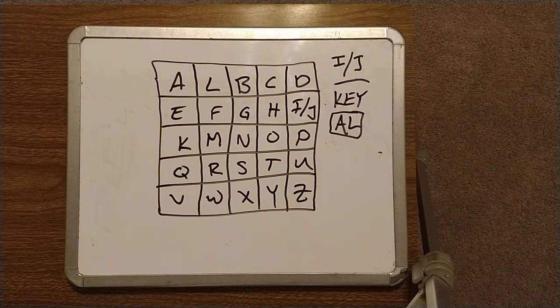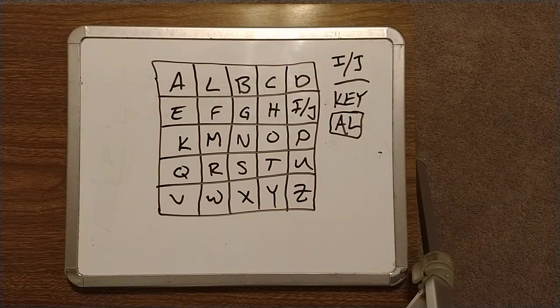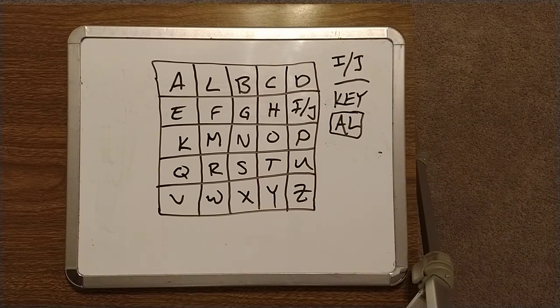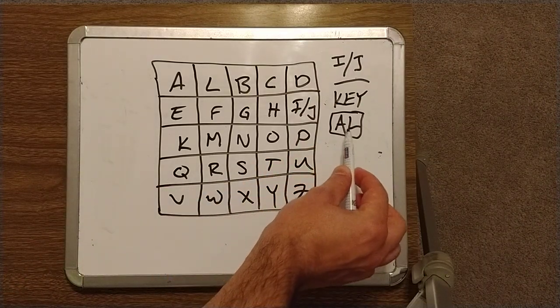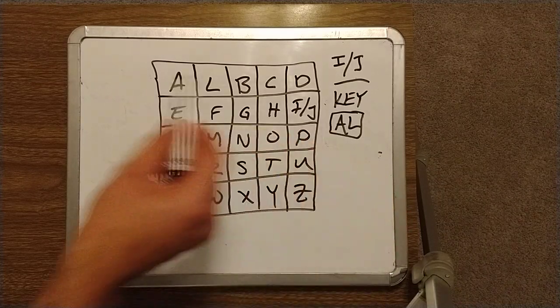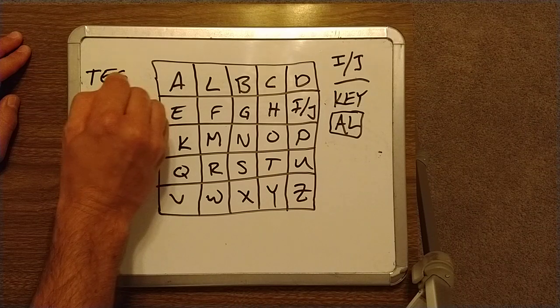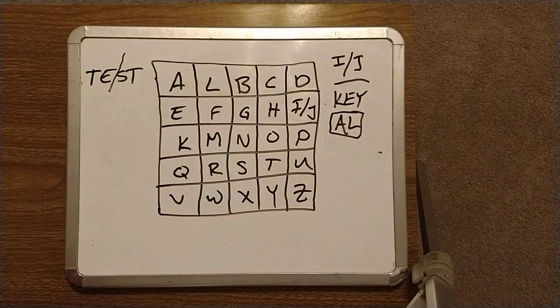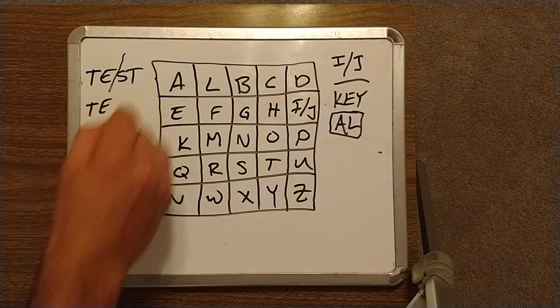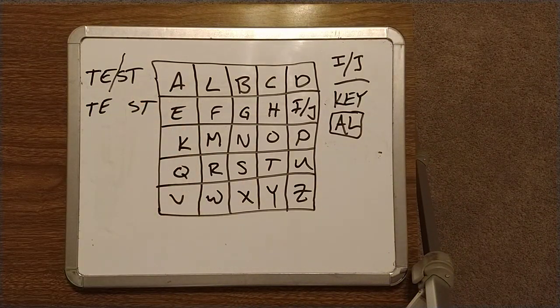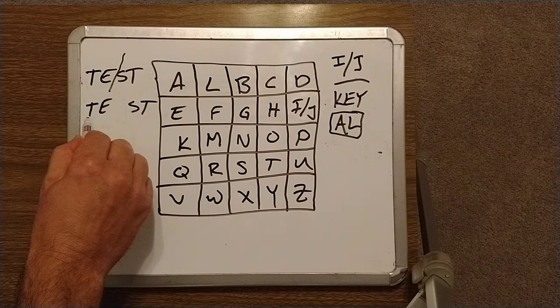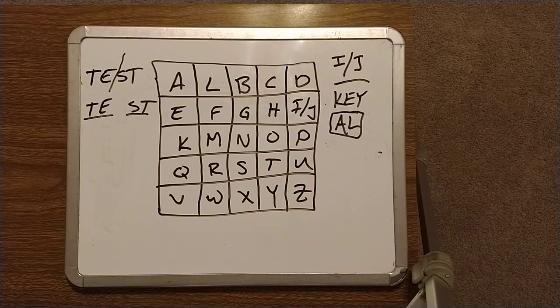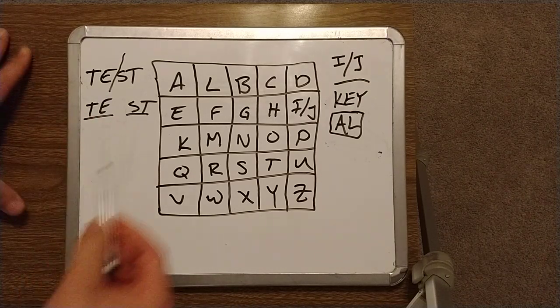Now, here's the foundation for our digraph using the AL digraph as the key. Now, how do we go about encrypting using this Playfair cipher? It might be complicated at first, but just stick with me and you'll pick it up very quickly. So in the digraph cipher, you remember that you encrypt everything with two letters, with a digraph.